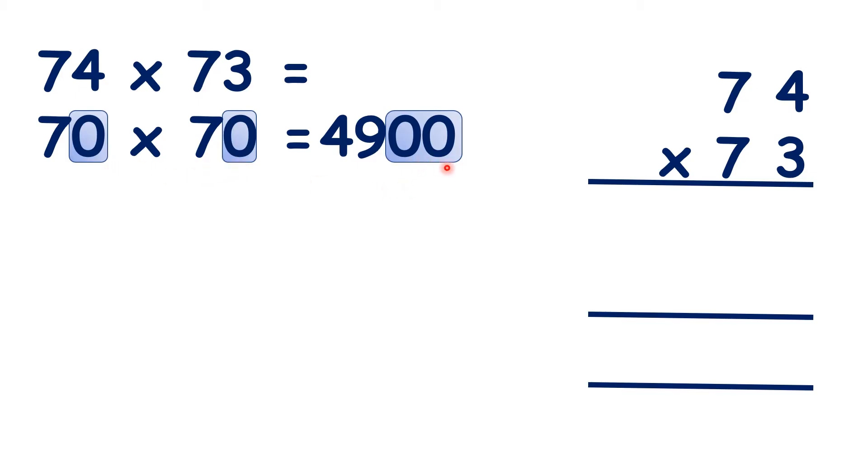But, is 4,900 an underestimation or an overestimation? Do you think our actual answer will be larger than 4,900 or smaller than 4,900? Well, to get 70 times 70, we rounded both numbers down, so that means 4,900 will be smaller than our actual answer.